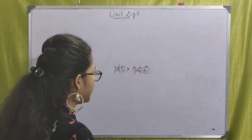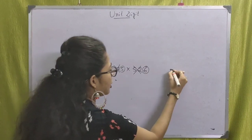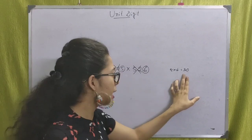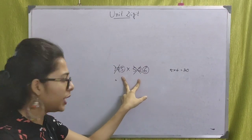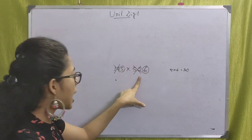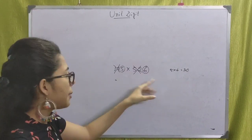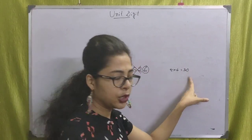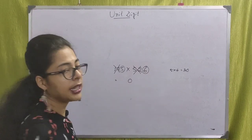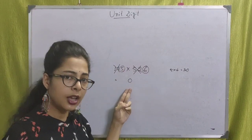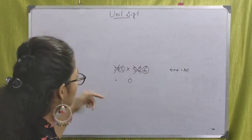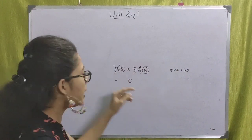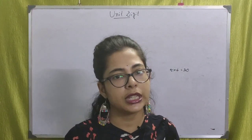So, 5 into 6 is 30. The unit digit of 30 is 0. That is the unit digit of the multiplication. We only need to multiply the unit digits of each number — the result's unit digit is our answer.